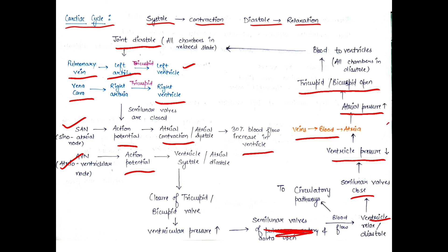So that was all about the cardiac cycle and human circulation. It is very easy to understand if you follow the flowchart. If you have any problems or questions, please mention them in the comment section and I will solve them. That is all for today, thank you for watching.